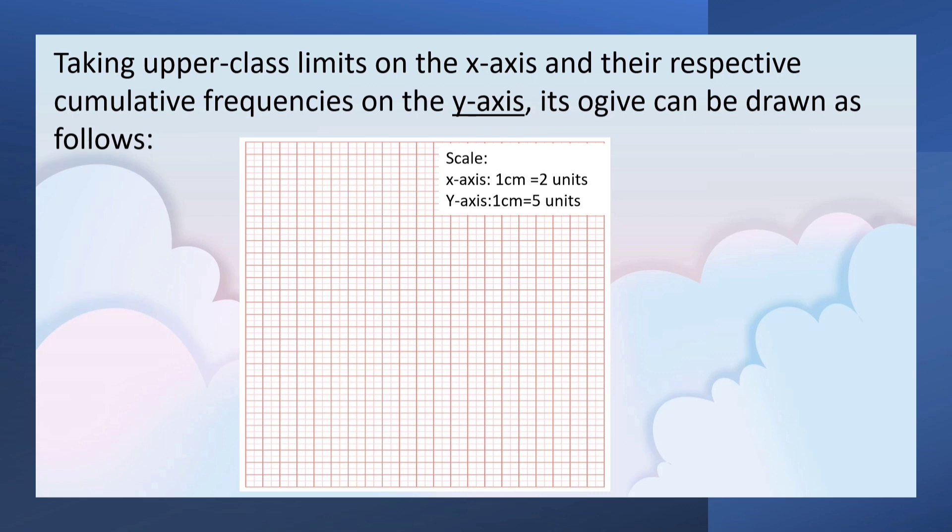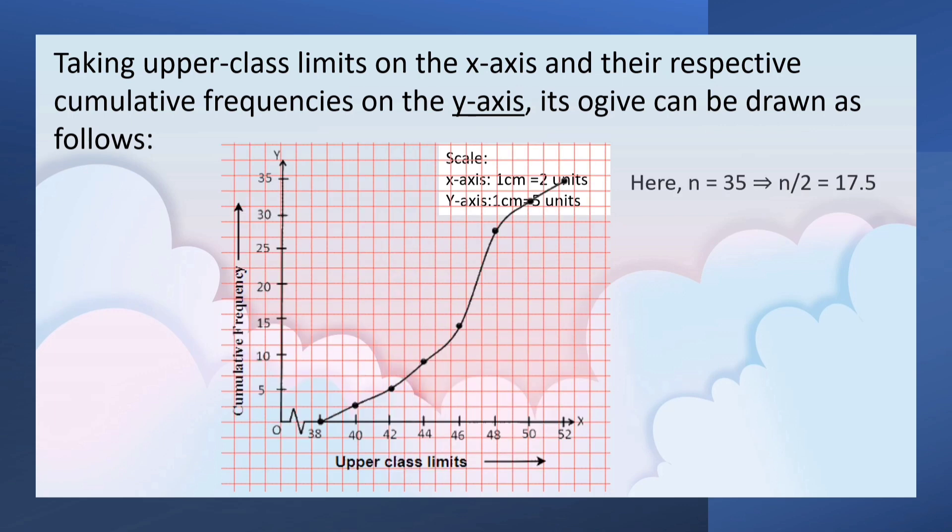Taking upper class limits on the x-axis and their respective cumulative frequencies along the y-axis, you can draw the ogive. Scale along x-axis is 1 cm equals 2 units. Along y-axis, 1 cm equals 5 units. Now you can draw a graph like this and join the points.